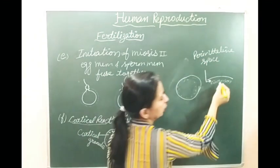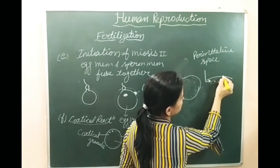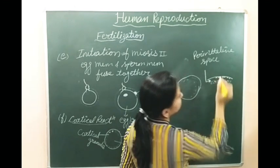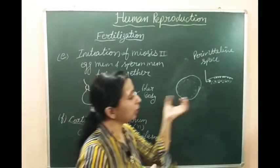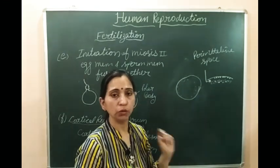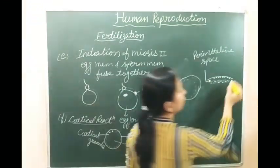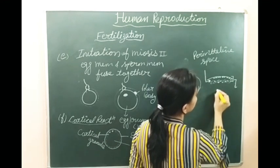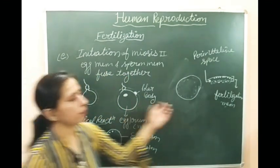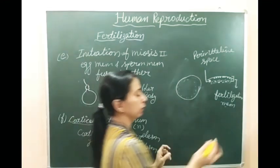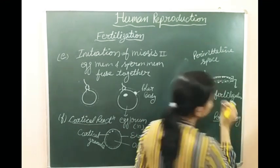The cortical granules present in the exoplasm are secreted into this perivitelline space, and some cortical granules bind with the inner side of the egg membrane. This binding makes an impervious barrier so that another sperm will not enter - this is another way to avoid polyspermy. When the cortical granules bind with the inner side of the egg membrane, the structure formed is known as the fertilization membrane, and the reason for its formation is to avoid polyspermy.